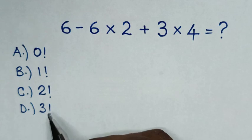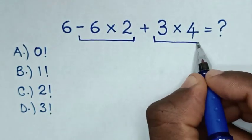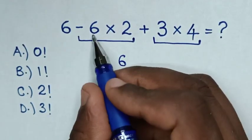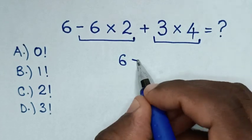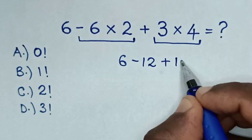3 factorial. So first we'll deal with this multiplication and this multiplication. So here it will be 6, then negative 6 times 2 is negative 12, then 3 times 4 is positive 12.